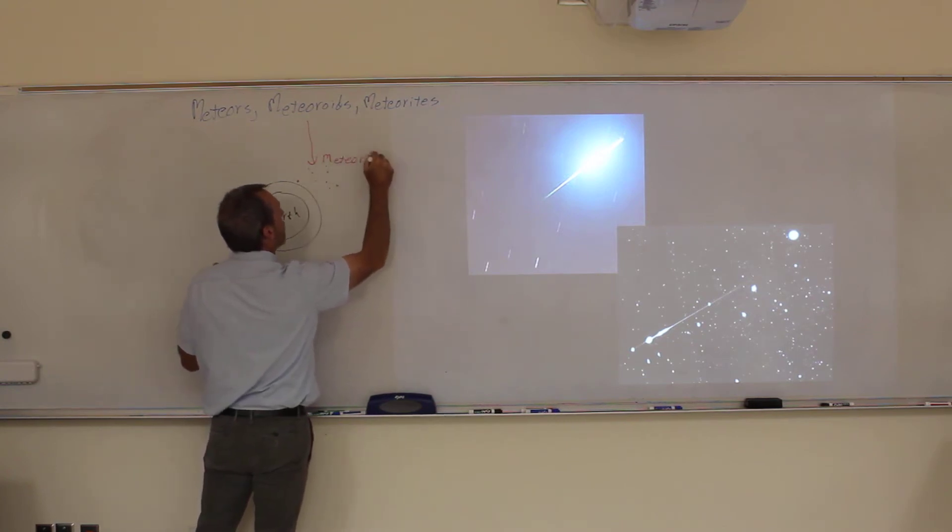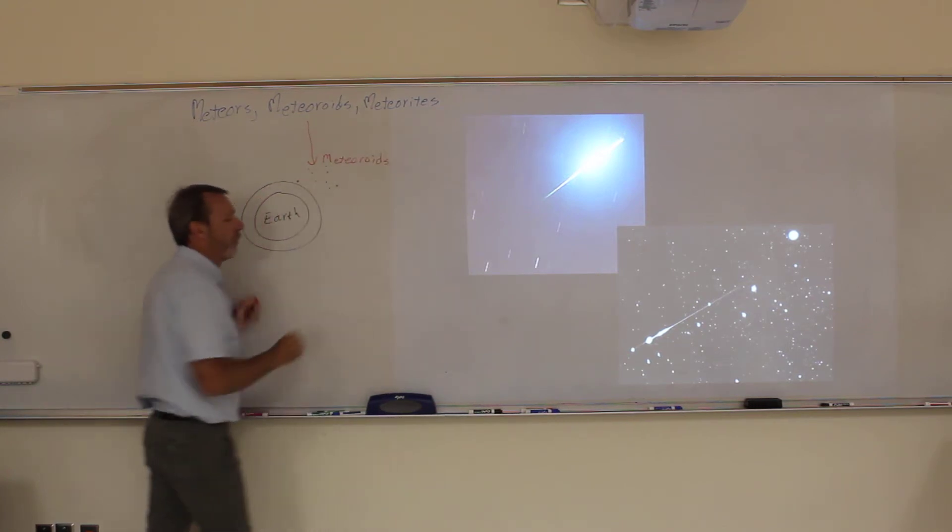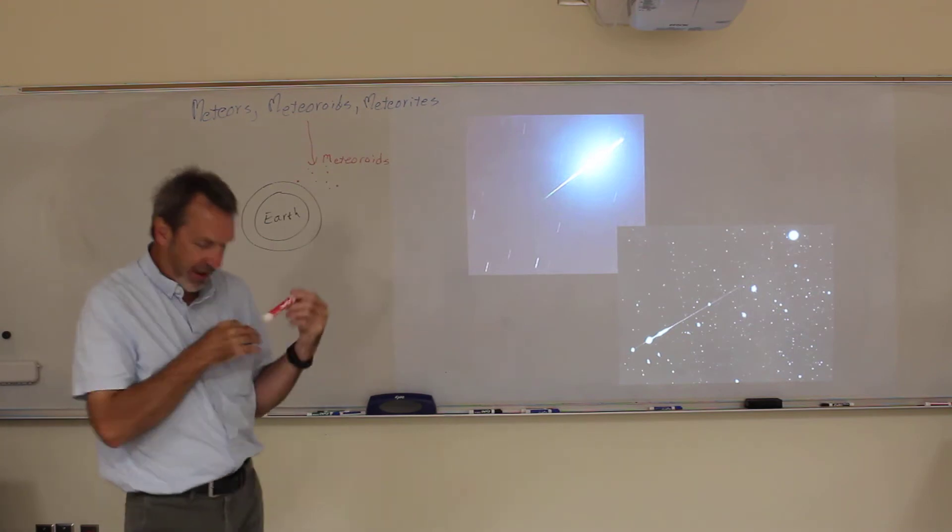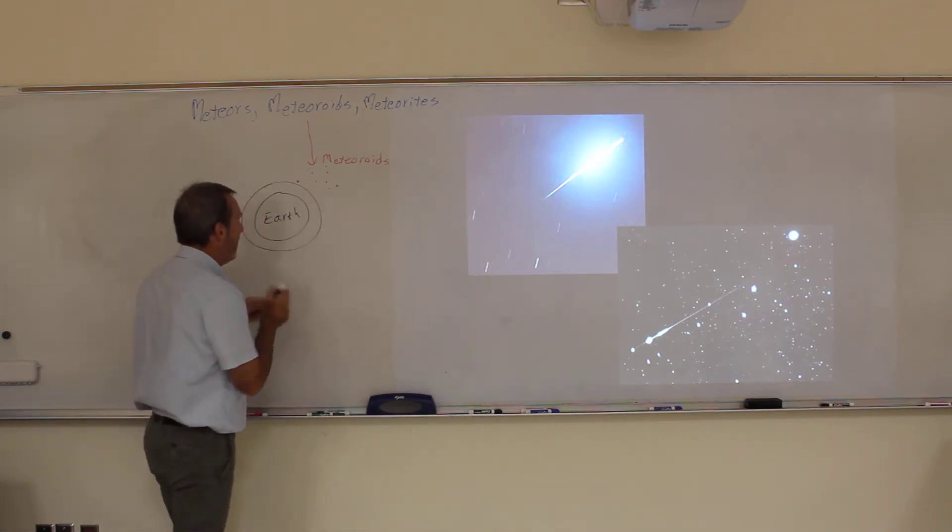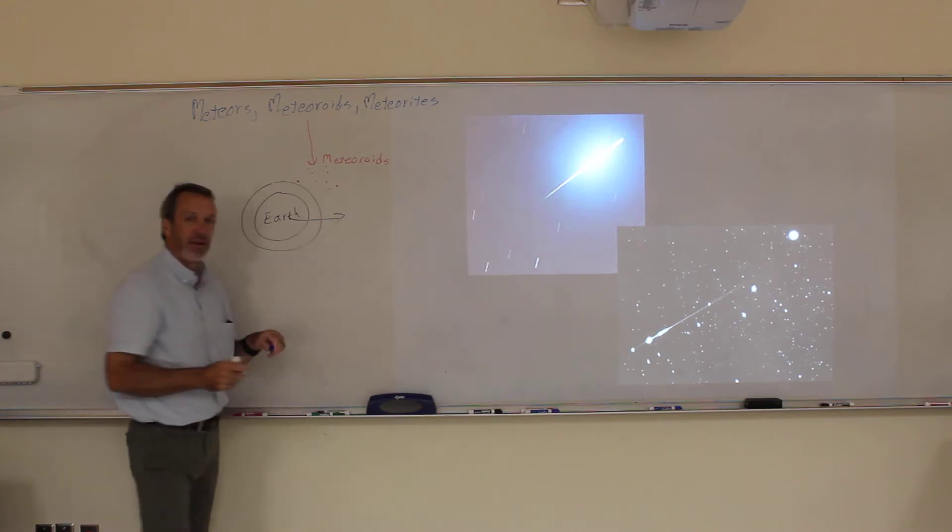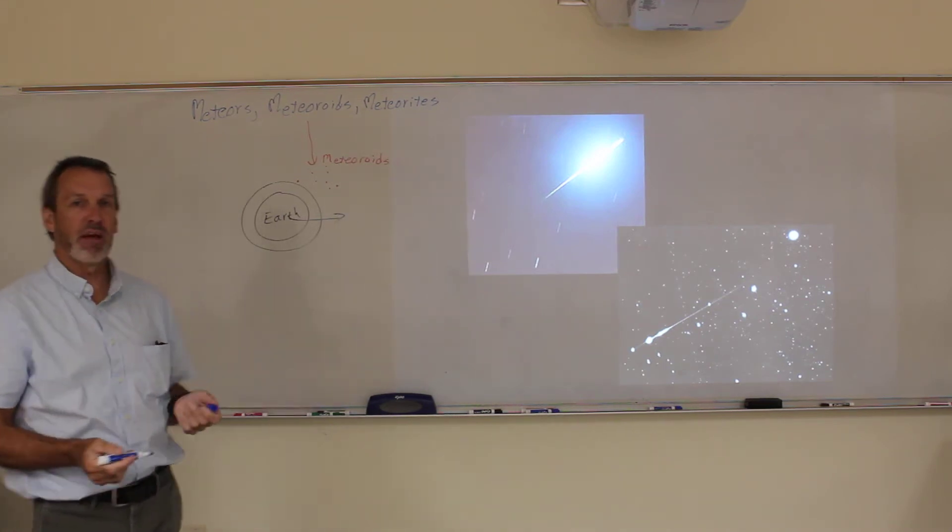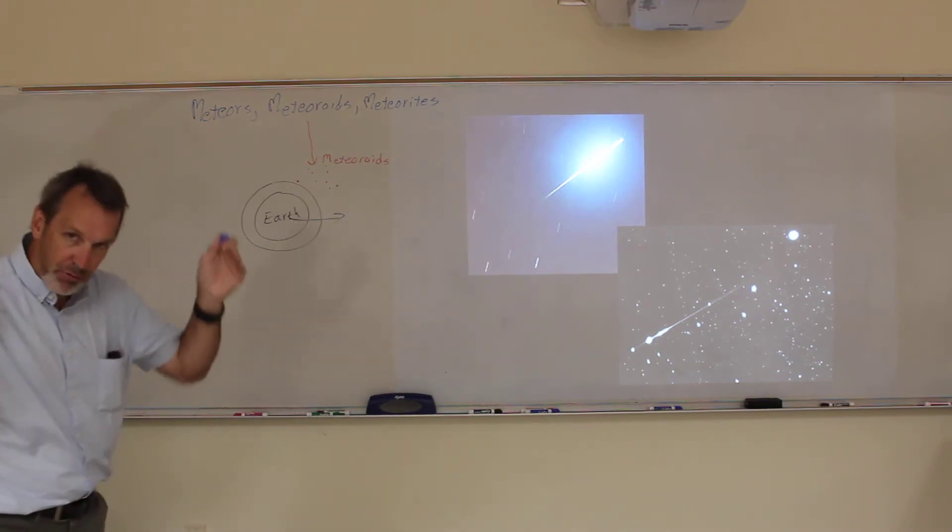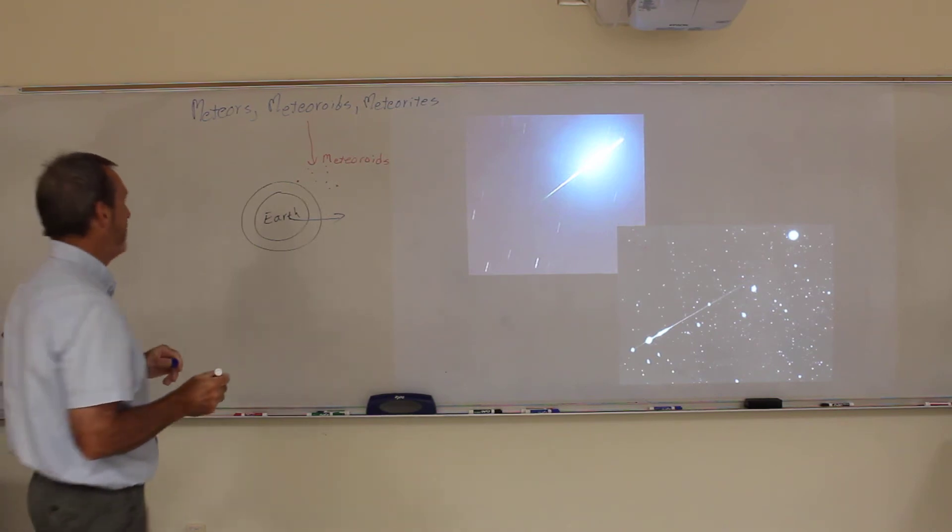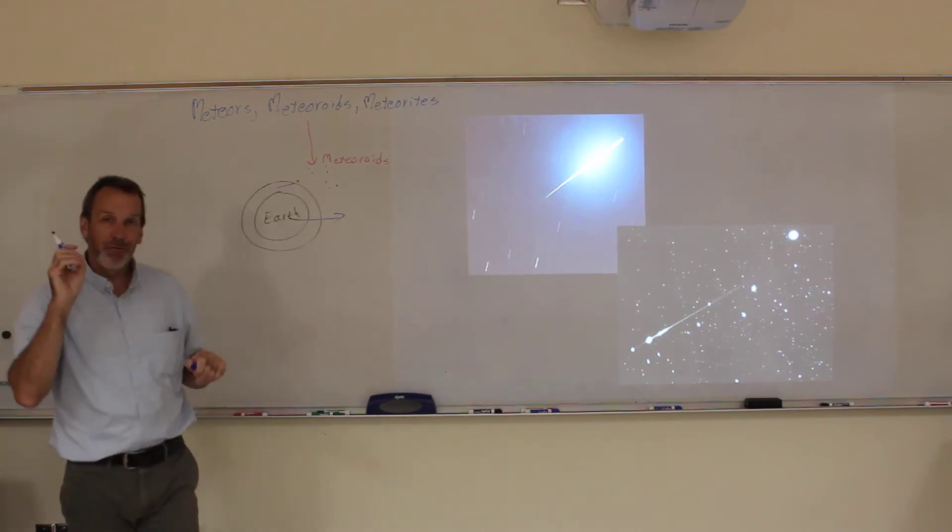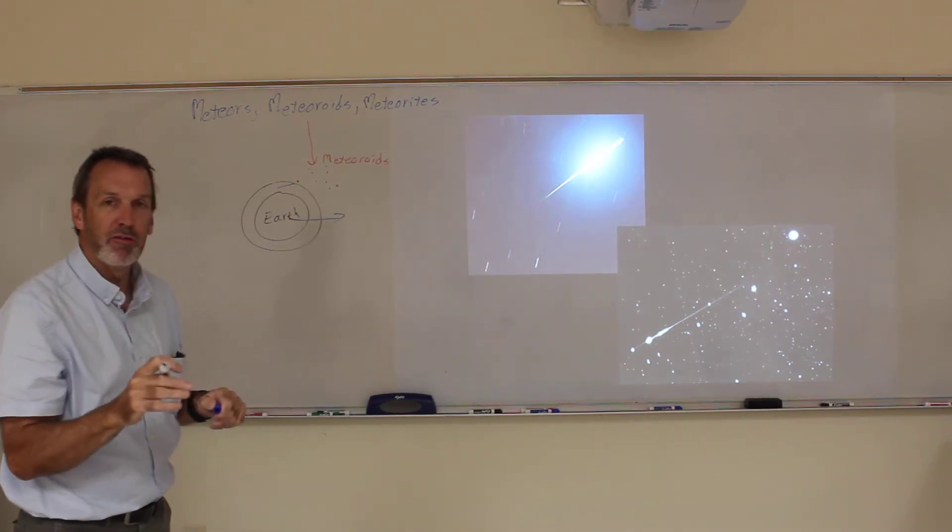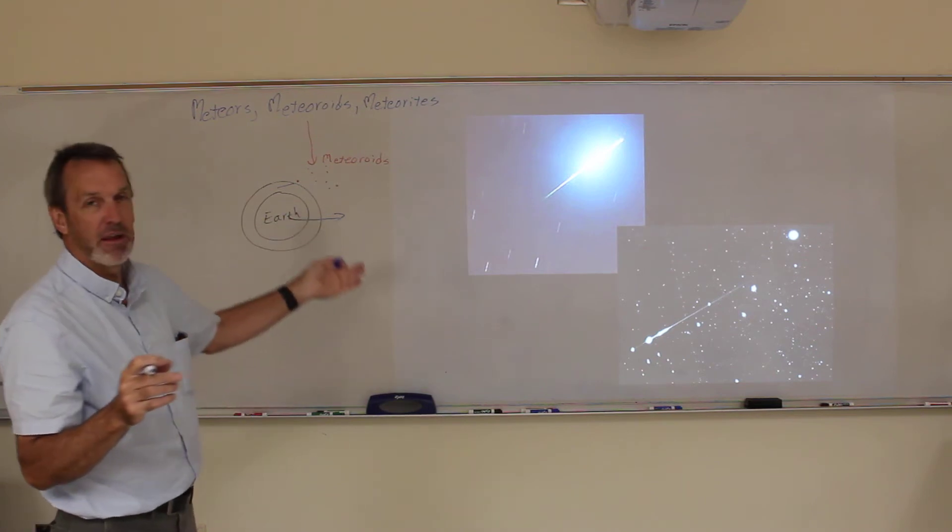So meteoroids are pieces of sand and dust that are floating around out in space. And remember the Earth is orbiting, and we're orbiting at a very high rate of speed, like 30,000 miles an hour. So if they're just sitting there, we're still going to hit them at a very high rate of speed. When they hit that atmosphere at that rate of speed, the friction with the atmosphere immediately heats them up to thousands of degrees, which means they give out visible light.